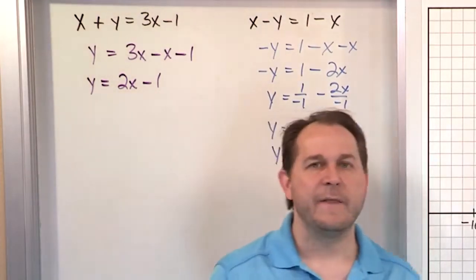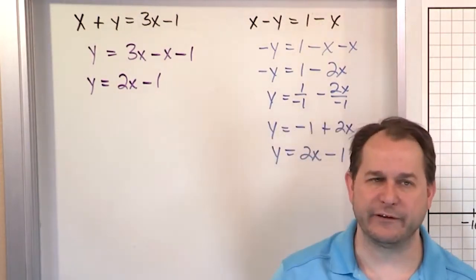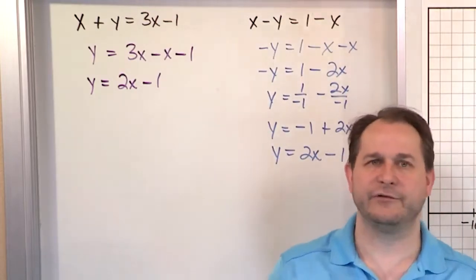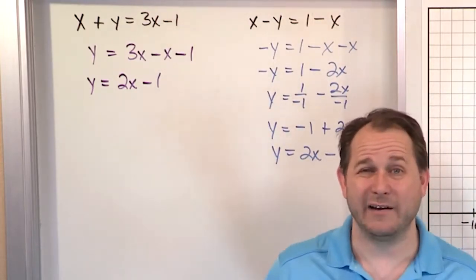So what it means is there's an infinite number of solutions. All the points on either line is the solution to the other one because it's the same line.